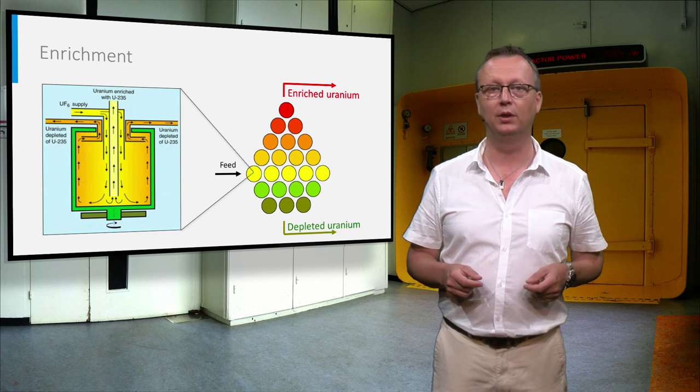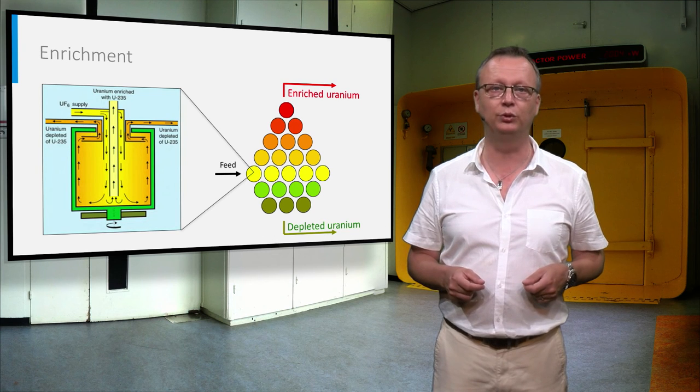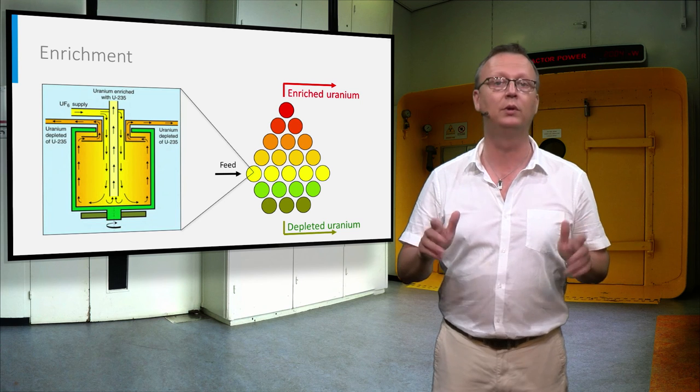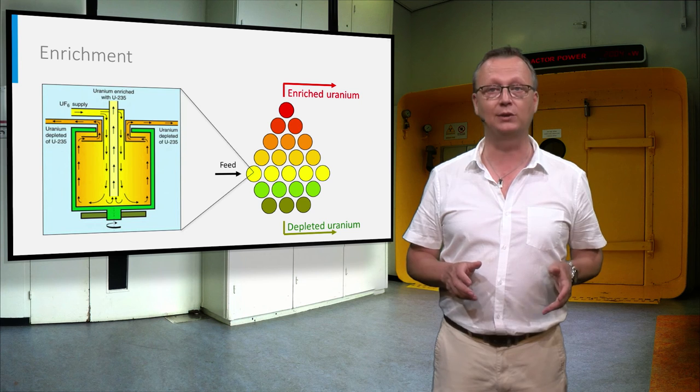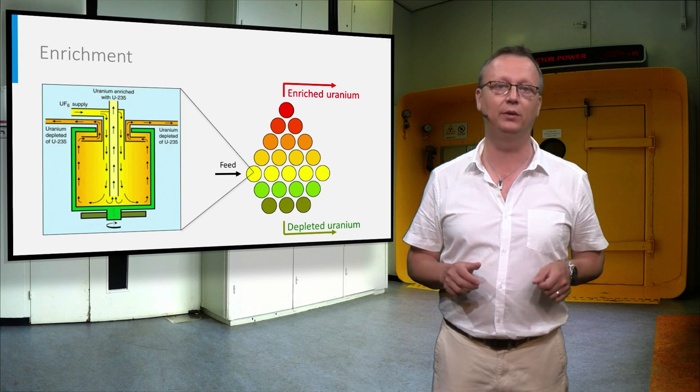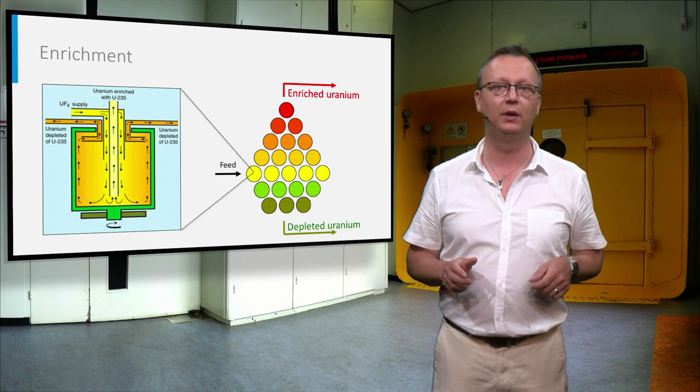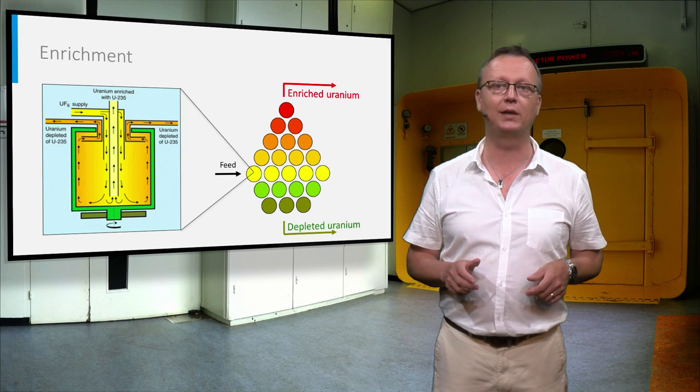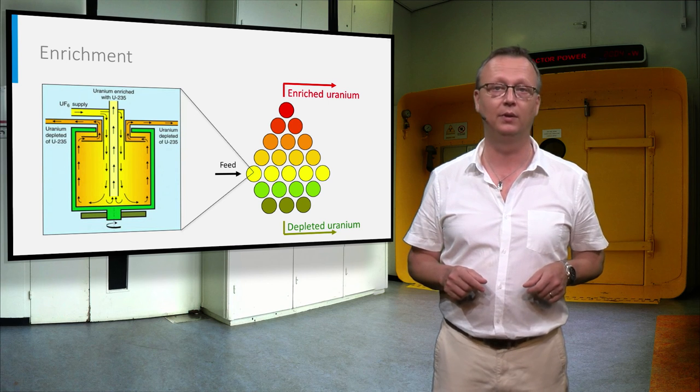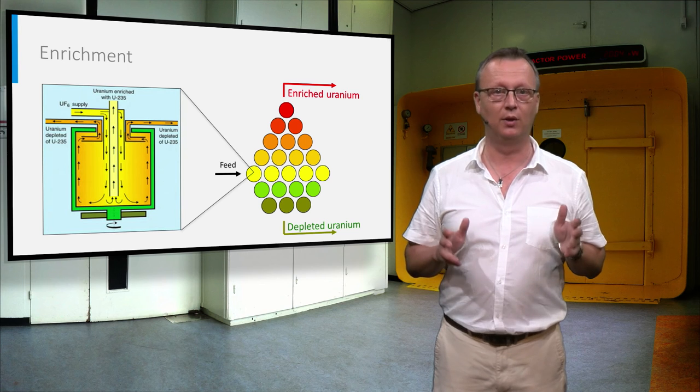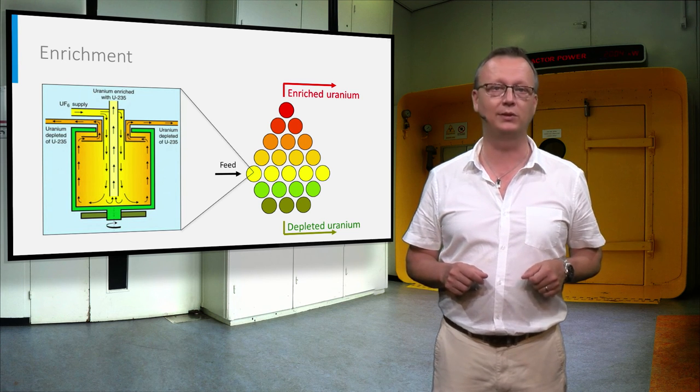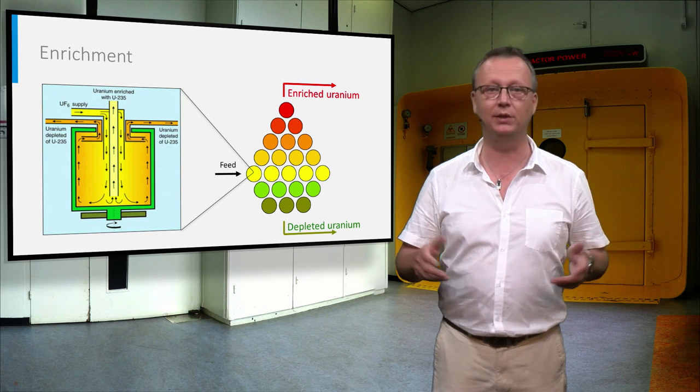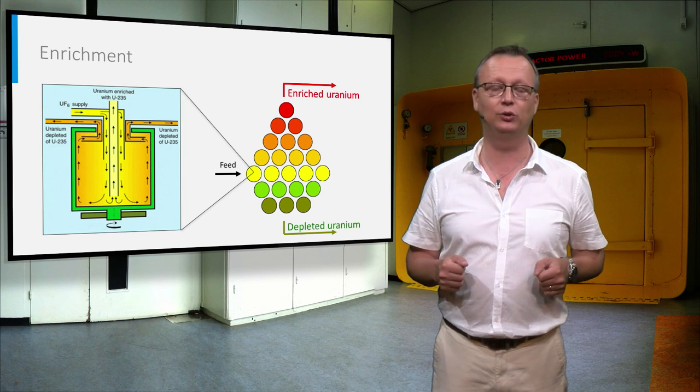In the centrifuge, centrifugal forces push the heavier uranium-238 fluoride closer to the wall of the rotor than the lighter uranium-235 fluoride. The gas closer to the wall becomes depleted in uranium-235, whereas the gas nearer the rotor axis is slightly enriched in uranium-235. The efficiency of one centrifuge is very small, and therefore many are combined in one stage, and the stages are placed in cascades in which the yield is optimized.